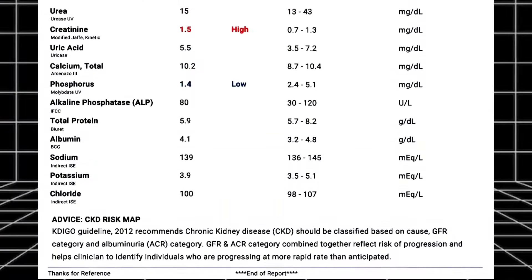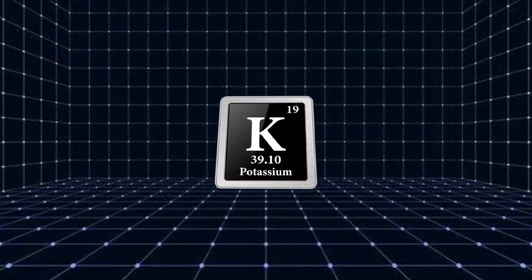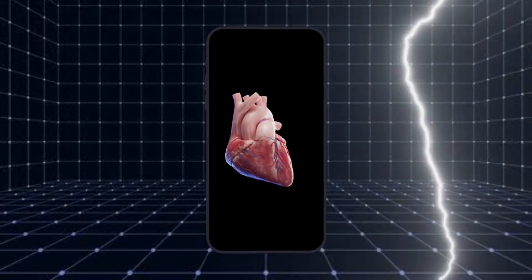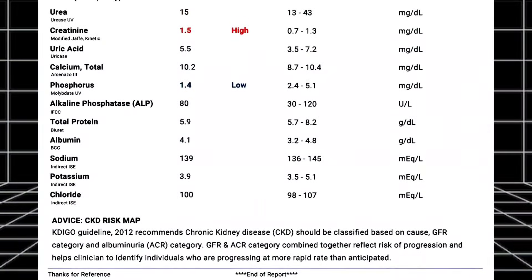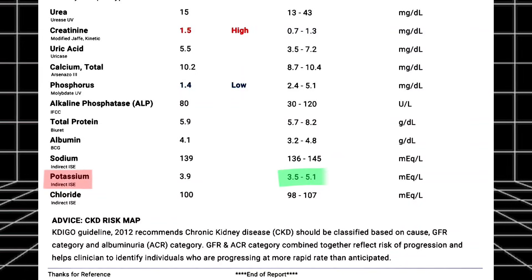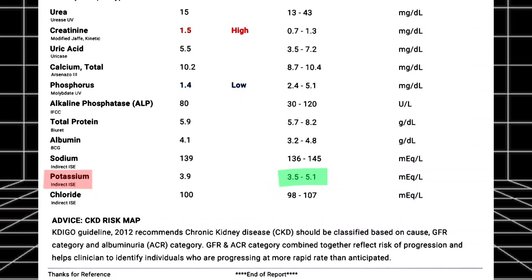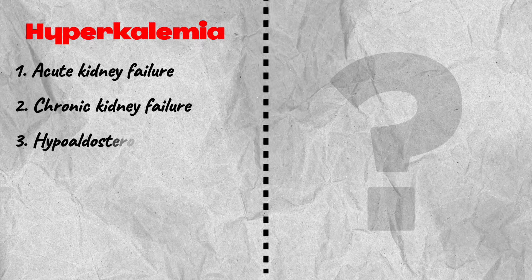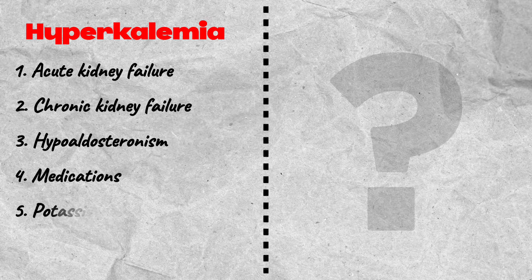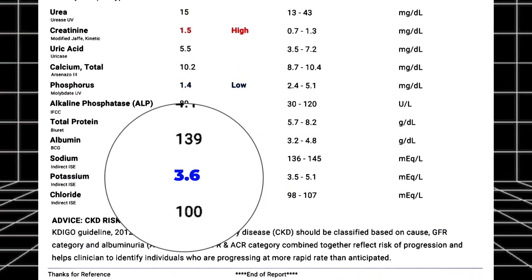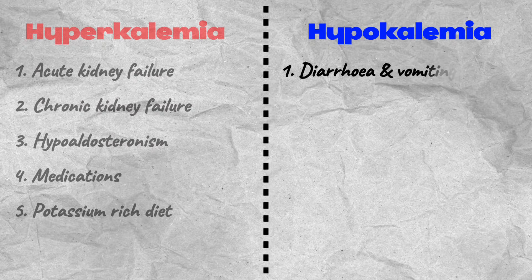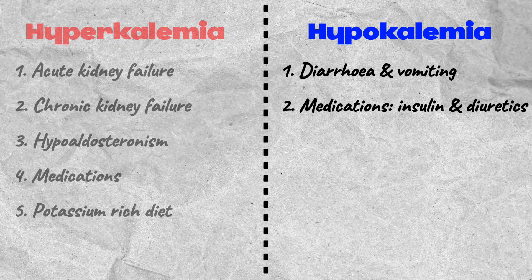Next is potassium, an electrolyte that helps conduct electricity through the body, helping the heart beat regularly and muscles work properly. The normal range of potassium in blood is between 3.5 to 5.1 milliequivalents per liter. High potassium is called hyperkalemia, seen in acute kidney failure, chronic kidney failure, hypoaldosteronism, certain medications, and a diet high in potassium. Low potassium is called hypokalemia, seen in diarrhea and vomiting, medications such as insulin and diuretics, Cushing's syndrome, low magnesium, and genetic disorders.